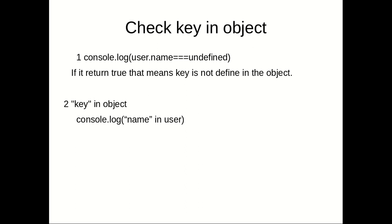The next question is: how can we check whether a key exists in an object? For example, if you have a user object and want to check if 'name' is present, there are two ways. First, check if `user.name === undefined` — if it is undefined, the key doesn't exist. Second, use the `in` keyword: `'name' in user`, `'age' in user`, or `'contact' in user`.